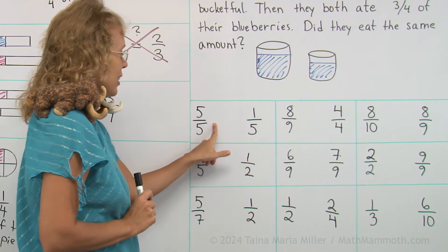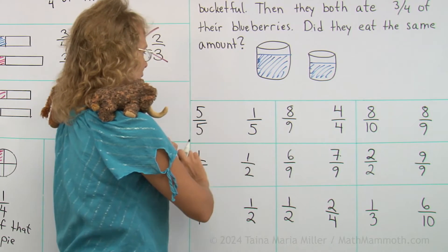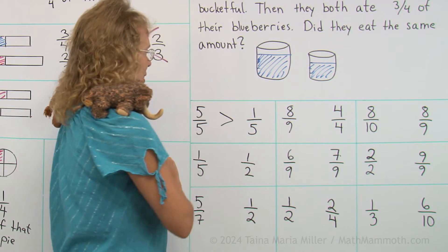So which one is more, five-fifths or one-fifths? These are the same kinds of pieces, so five pieces is more than one piece.